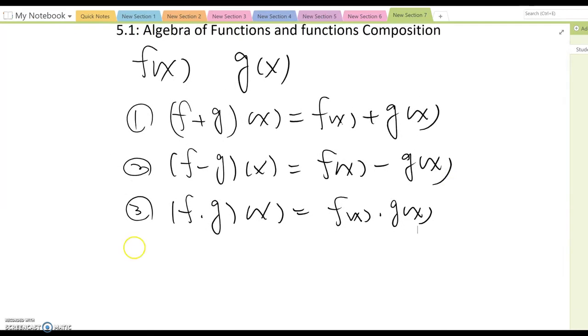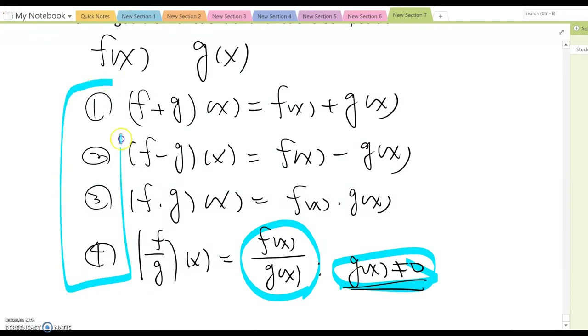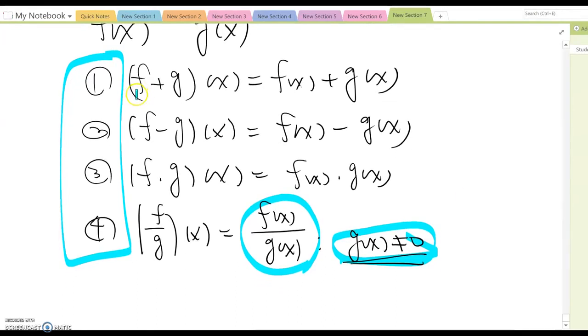Then finally number four: (f/g)(x), then this becomes f(x) over g(x). But this case we need to confirm g(x) cannot be zero, because if it is, then this whole combined function would be undefined. So these four different cases, now we want to practice first. And now I show that it doesn't always have to be f+g or f-g, it can be g-f or g times f, something like that too.